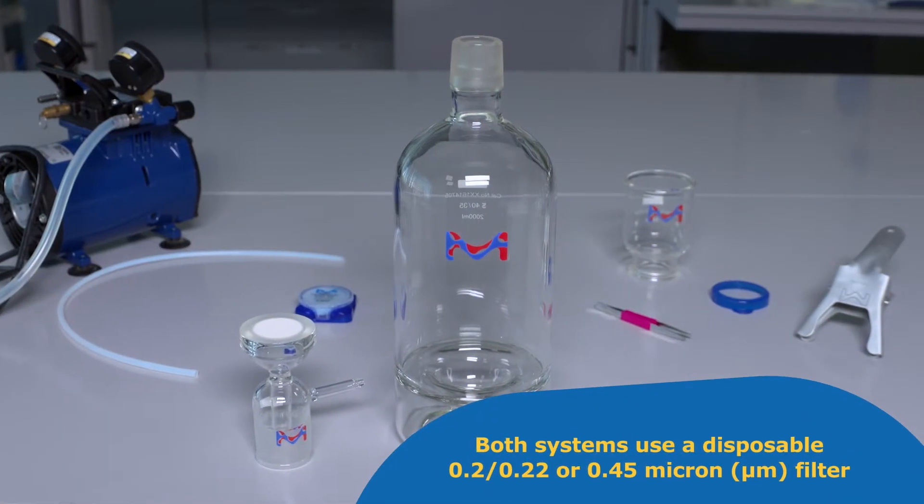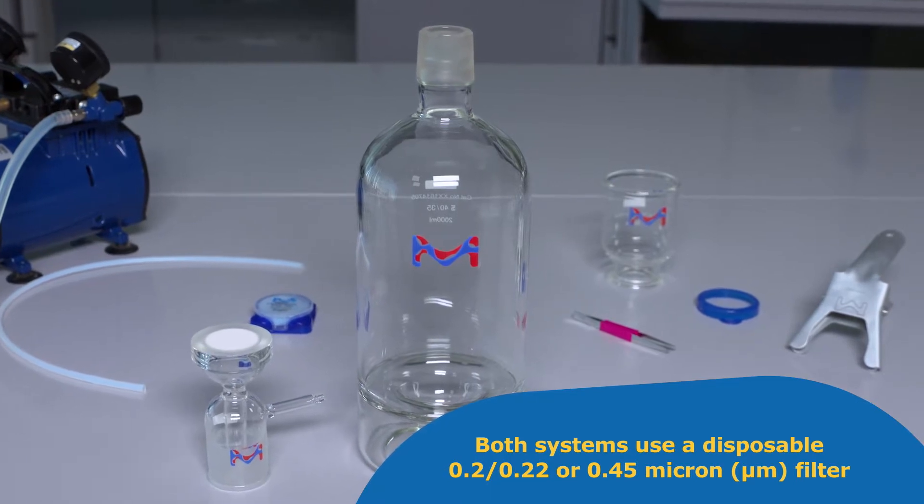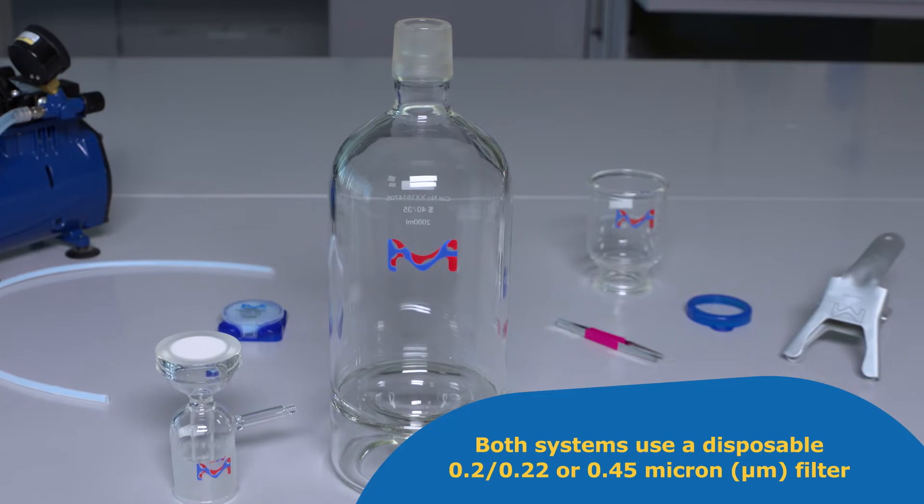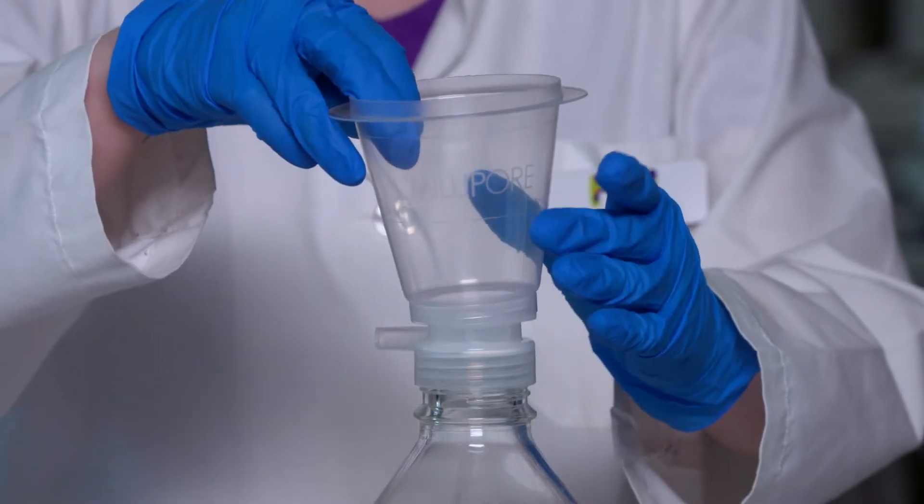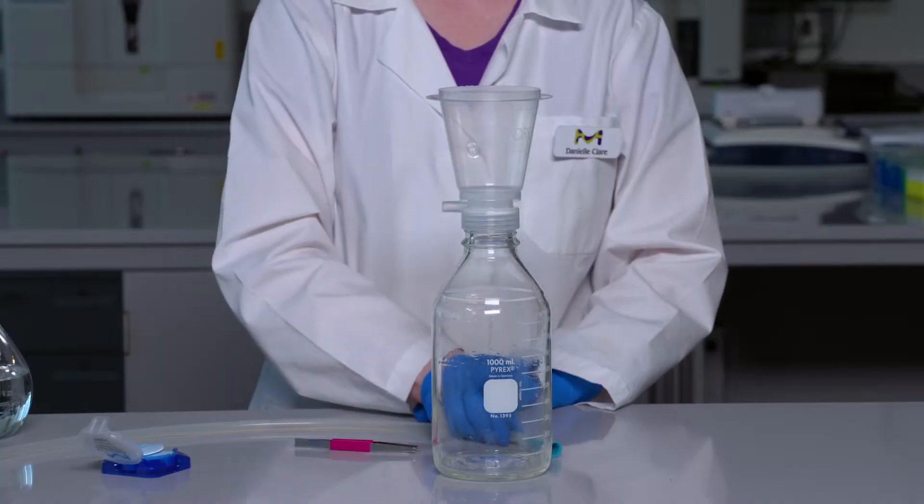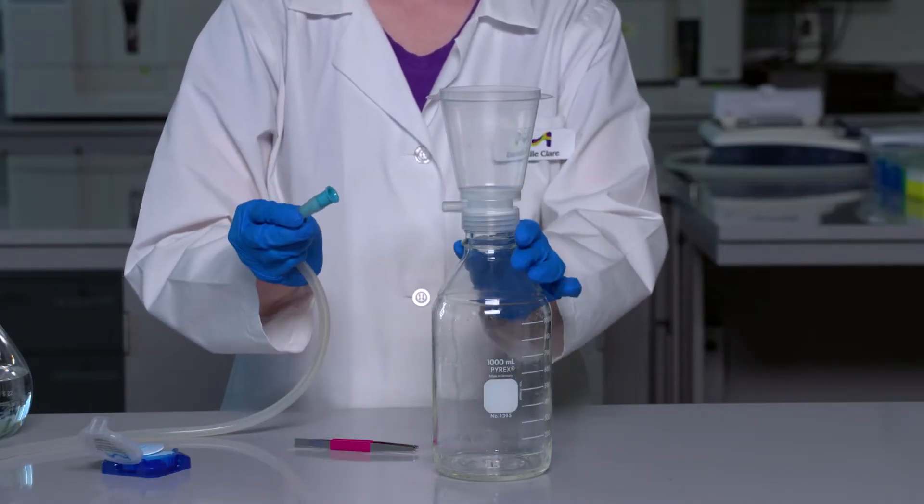Both systems use a disposable 0.22 or 0.45 micron filter to remove particles which can shorten column life. Vacuum filtration through these systems can also remove a large portion of dissolved gases from buffers, reducing the risk of air bubble interference with LC instrumentation.